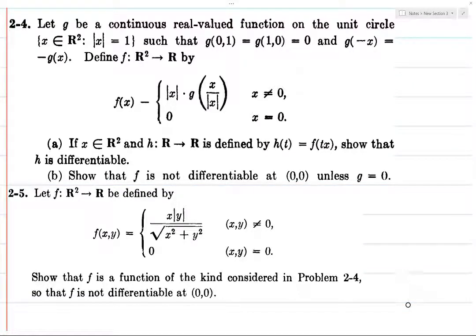So we've got this particular function defined in this way, and we want to show that it's of the type considered in 2-4, and then conclude that f is not differentiable at (0,0). So we want to find some function g such that f of x can be written as the norm of x times g of x over the norm of x, where g needs to be a continuous real-valued function on the unit circle satisfying those properties.